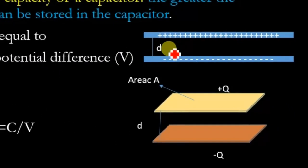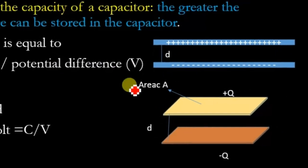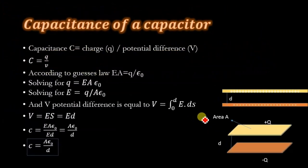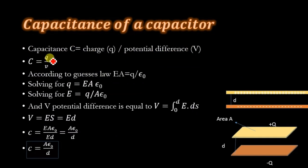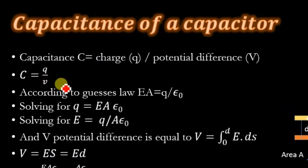Let's determine the capacitance for this parallel plate capacitor. We know that the capacitance is equal to the charge divided by the voltage. According to Gauss's law,